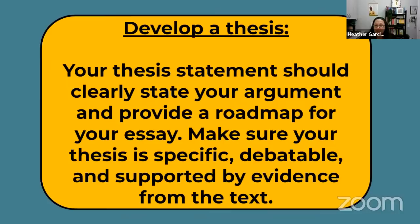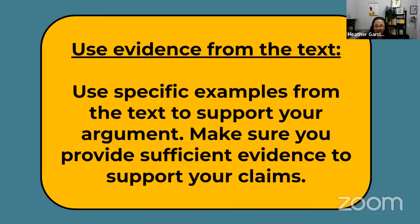Make certain your thesis is debatable and make sure you can support it with evidence from the text. When pulling examples — and I'm specifically thinking about question three, the literary argument, where you don't have anything to quote from — pull super specific examples to support your argument. Don't say 'when Beloved haunts house 124' — say 'when that baby shook that house to its foundation in its dramatic haunting.' Super specific examples show the reader you've done the deep dive and give you more to elaborate from. Make sure you have more than one piece of evidence to back up your claims.